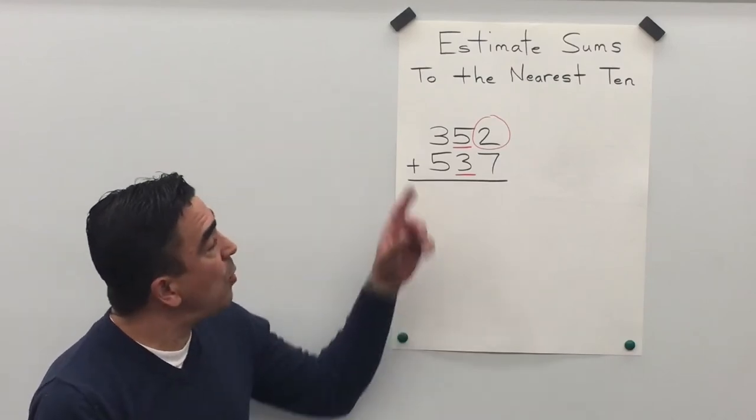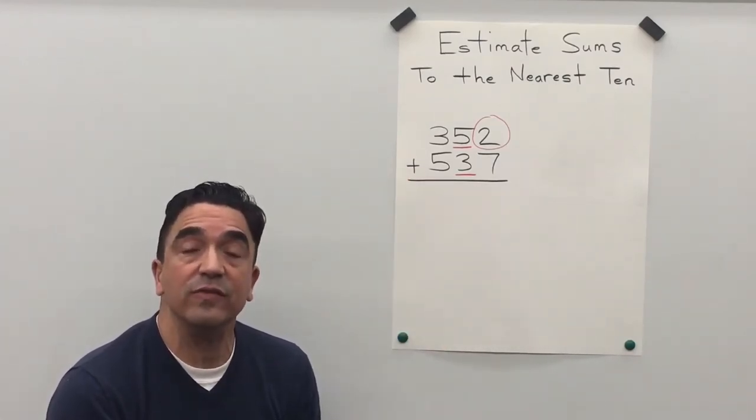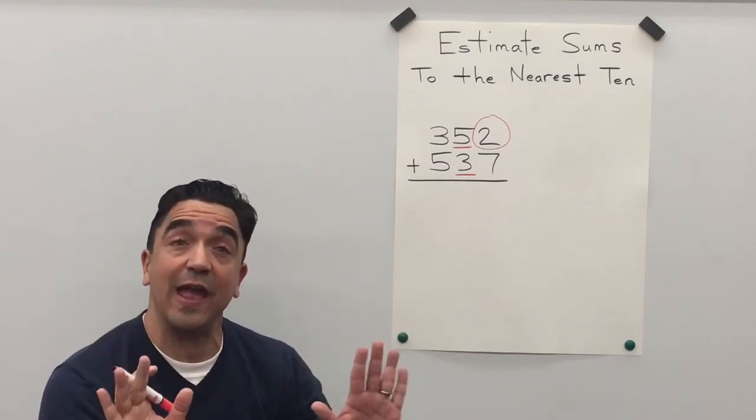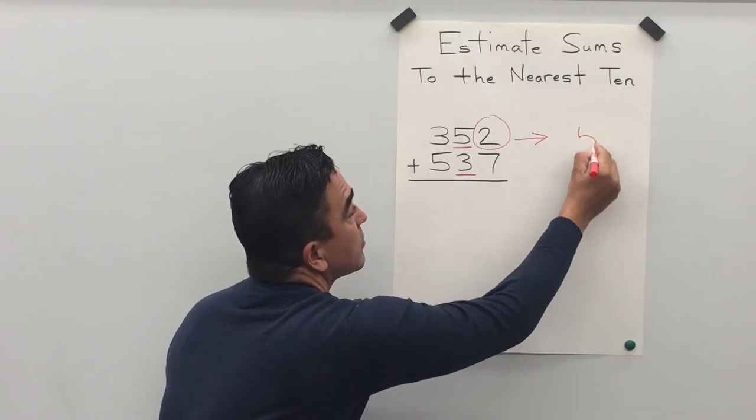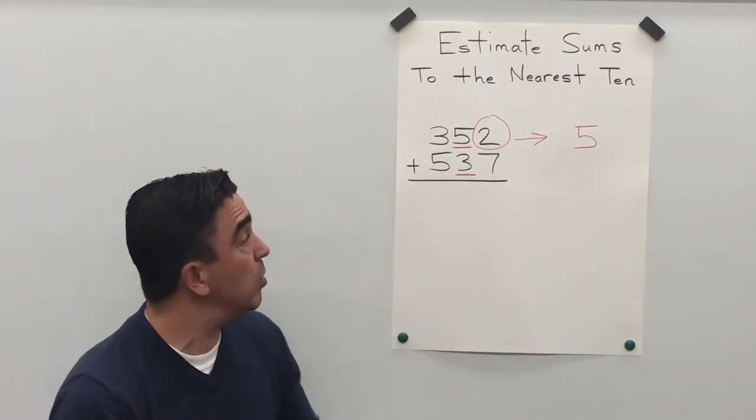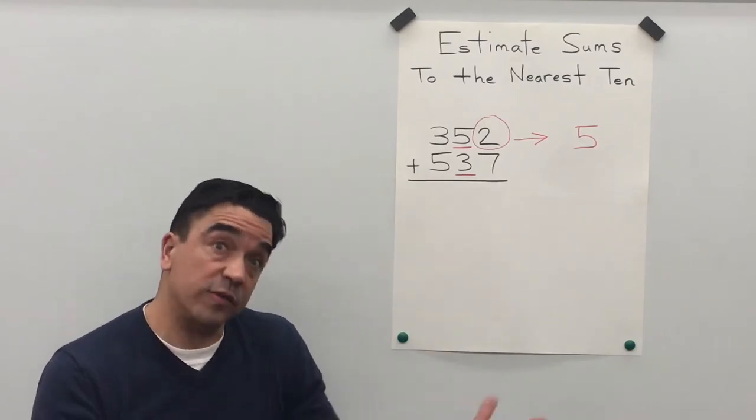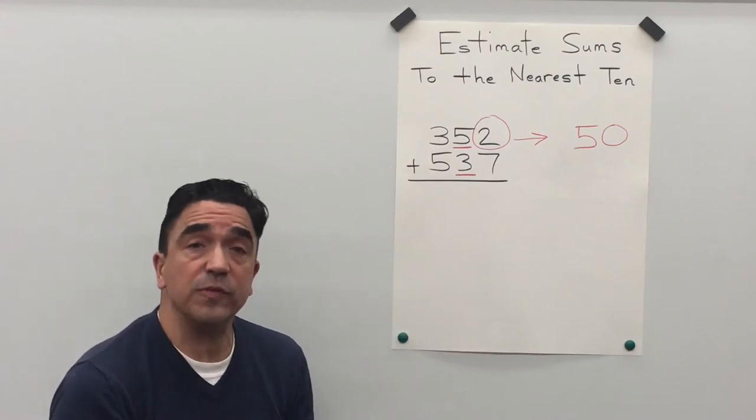The two in the ones place is going to tell the five in the tens place to stay the same. And all the digits after become zero. One digit, so it's going to become zero. The three in the hundreds place we're just going to drop it.